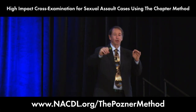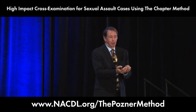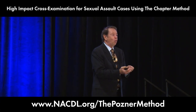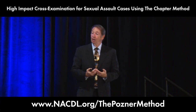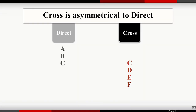Asymmetrical cross-examination is a realization that in winning modern cross, we may ignore things said on direct. There may be things in the direct we just don't care about, or more to the point, there may be things left out of direct where we say, let's talk about some other things you found at the scene. Asymmetrical cross says just because they talked about A, B, and C doesn't mean I'm crossing on A, B, and C.